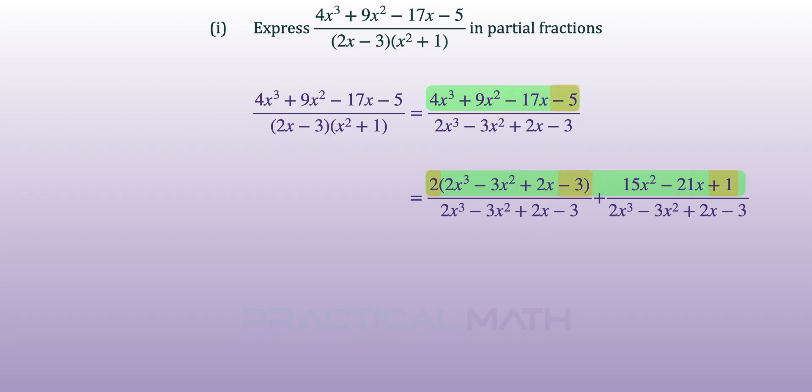Likewise, the product of 2 and negative 3 will be negative 6 and adding 1 will give us negative 5. Simplifying the first fraction we will get this proper algebraic fraction.